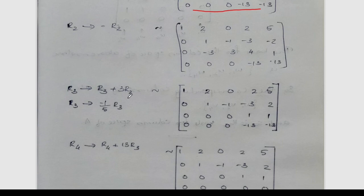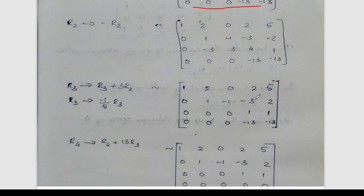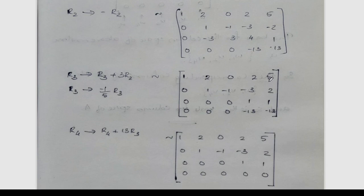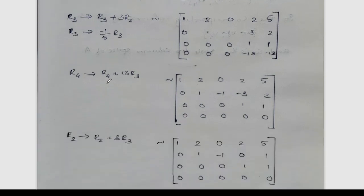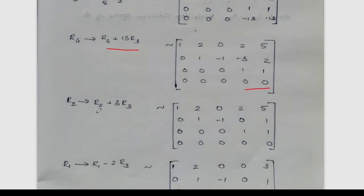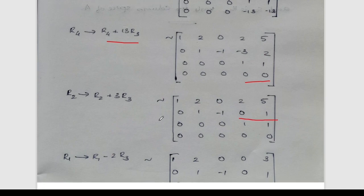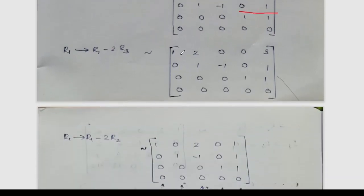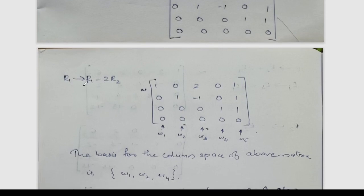R3 becomes R3 plus 3R2. After further reduction: first row 1, 2, 0, 0, 3; second row 0, 1, -1, -3, -2; third row 0, 0, 0, 1, 1; fourth row 0, 0, 0, -13, -13. Then R4 becomes R4 plus 13 times R3. R2 becomes R2 plus 3R3, and R1 becomes R1 minus 2R3. Final form: first row 1, 2, 0, 3; second row 0, 1, -1, 0, 1; third row 0, 0, 0, 1; last row all zeros.